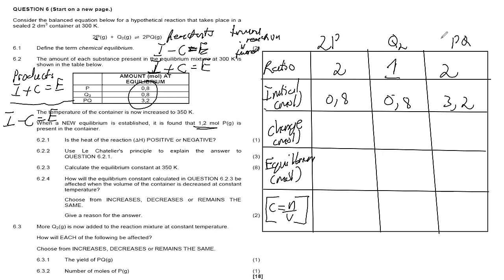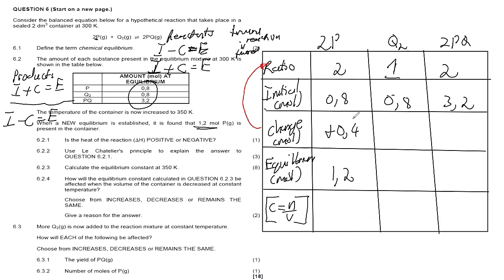At equilibrium, 1.2 mol of P is present. To get from 0.8 to 1.2, we add 0.4 — so the change for P is +0.4. Now using our ratios on the change row: for Q₂, we calculate 0.4 multiplied by 1 divided by 2, which gives +0.2. Q₂ is also a reactant so it also gets a plus.